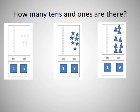Second picture. How many tens? One ten. And ones? Count: one, two, three, four, five, six and seven. So, it is one ten and seven ones — seventeen.